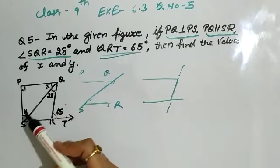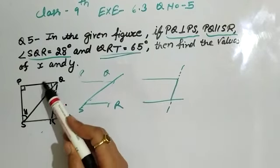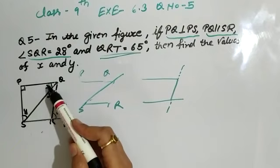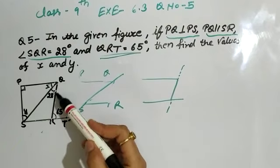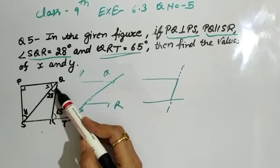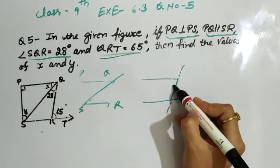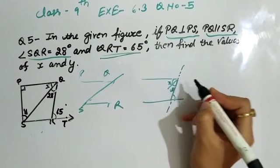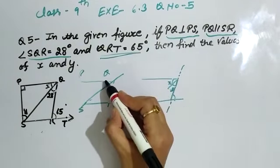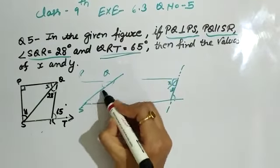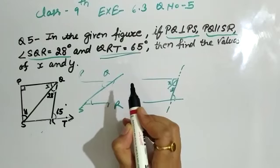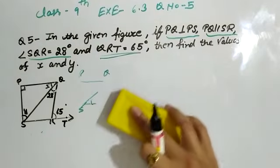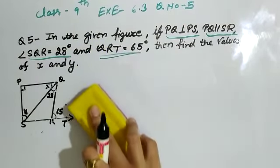If I use QS, that angle is already unknown, so it has no use. But if I consider QR as the transversal line, then the complete angle PQR and angle QRT are alternate interior angles. This is the property we will use.